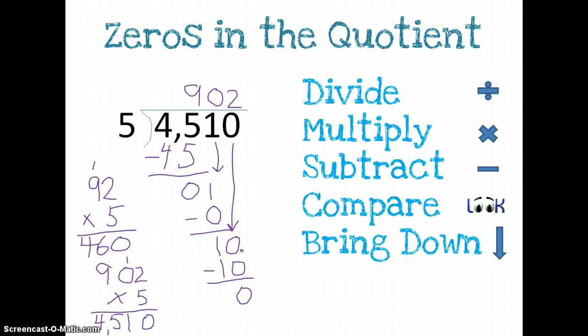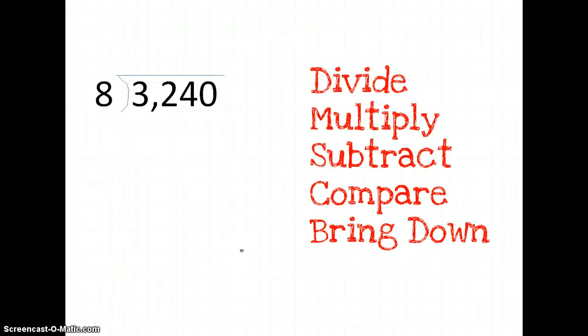Let's try another one. Alright, we have 3,240 divided by 8. 8 won't go into 3, so we move on to our next number. 8 will go into 32 four times. 8 times 4 is 32.